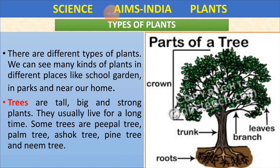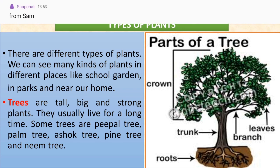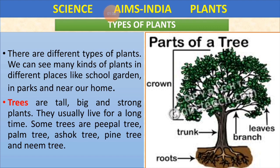We can see many kinds of plants in different places — in school gardens, in parks, and near our homes. You might have seen so many trees around you. These days we are growing more trees in our balconies, outside our homes, in school, in parks, and on roads. Even though we have so many plants, they are all different from each other. A big plant like the one in our slide — what do we call it? We call it a tree.